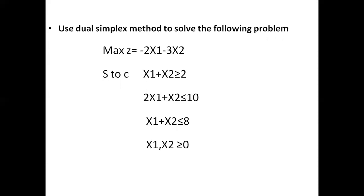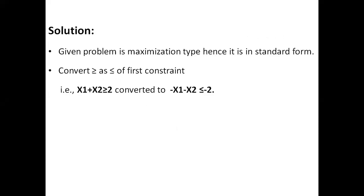The objective function is already in maximization type, hence it is in standard form. In the given constraints, out of 3 constraints, the first constraint has a greater than or equal inequality, so it should be converted to less than or equal. That is, x1 plus x2 greater than or equal to 2 is converted to minus x1 minus x2 less than or equal to minus 2, by multiplying minus 1 on both sides.